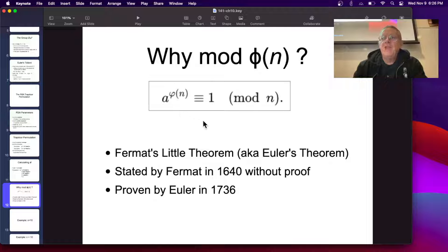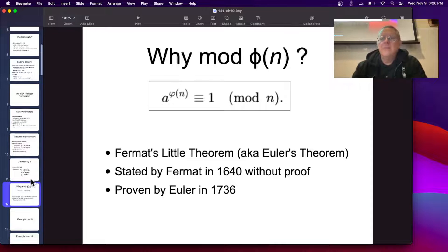So if you take any member of the group and you raise it to the phi power, it will go all the way around and come back to where it started. That's why it works. So that's the point. And this is called Fermat's Little Theorem, also Euler's Theorem. This statement that any element of a group raised to the phi power will always just come back to 1.